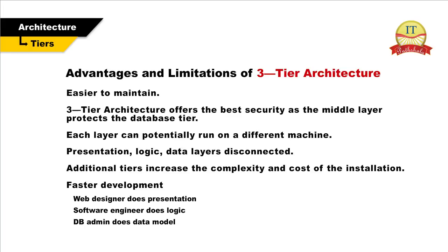Advantages and limitations of three-tier architecture: It is easier to maintain. Three-tier architecture offers the best security as the middle layer protects the database tier. Each layer can potentially run on a different machine. Presentation and logic data layers are disconnected. Additional tiers increase the complexity and cost of the installation. Faster development is enabled as the web designer does presentation, the software engineer does logic and the database admin does the data model.